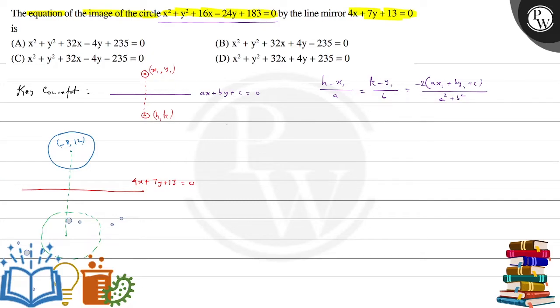Toh, sabse pahle haem log thoda sa, yeh joh equation hai, yaha pae g ka value is 8, f ka value is minus 12, or c ka value is 183.